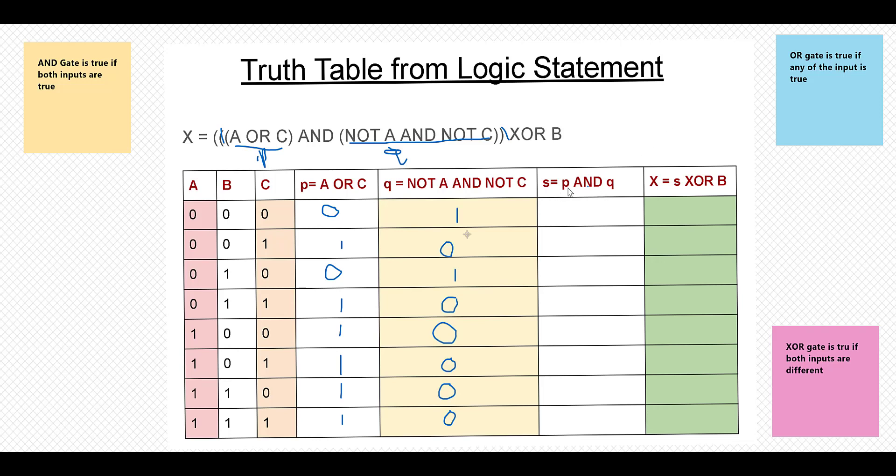Next is pretty simple, p AND q. So p AND q will never be true because they are never one simultaneously.